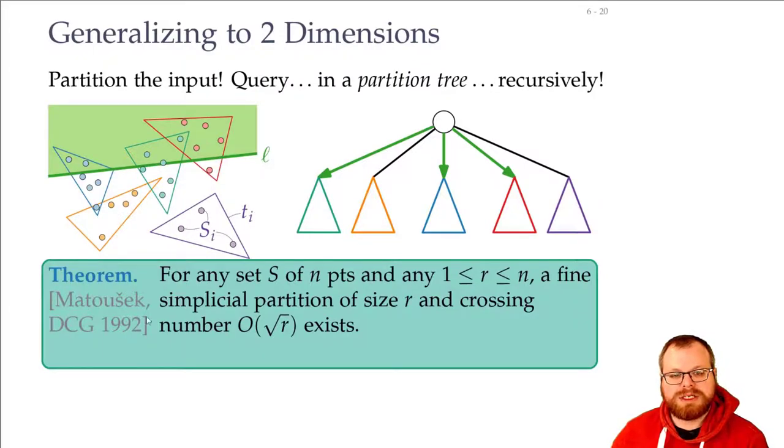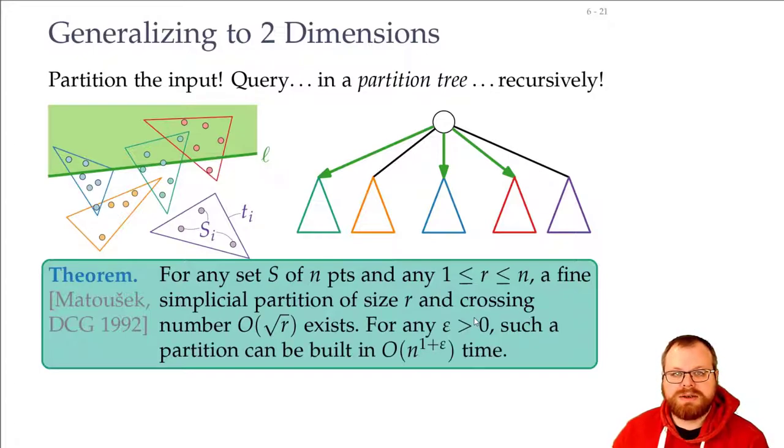And what's even nicer is that not only does this exist, but we can also find it efficiently. So for any epsilon that you choose, you can build such a partition in order of n to the 1+ε time. This is a bit weird if you don't know this running time. You can really plug in any epsilon here. The epsilon in the exponent can be as low as you want—it can be 1 divided by 1 million. But whatever epsilon you choose, this is always larger than order of n log n and always larger than order of n. So this is a very good running time, but it's not my favorite running time, because that's order of n log n and that's faster.